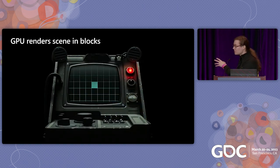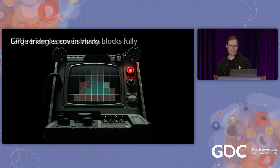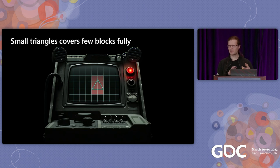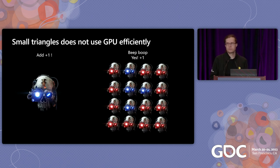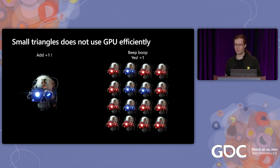These groups render the scene triangle by triangle, block by block. If you have large triangles, a lot of blocks will be fully covered by them. If you have small triangles, a lot of blocks will only be partially covered, meaning some cores in the group will sit idle and not contribute anything. So if you render things with a bunch of tiny triangles, you will not use the GPU efficiently. We can also look at something called quad utilization.